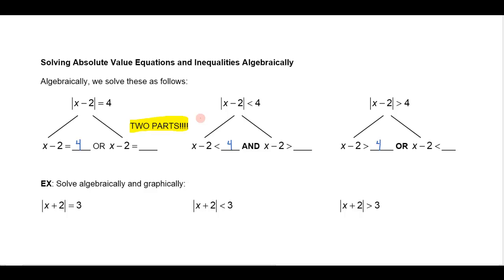That's only half of the problem — if you only do half, you'll definitely get it wrong. There's another half. The other half: look at what you did before, and you just reverse the inequality and put a negative 4 — change the sign. So if it's x minus 2 less than 4, you're going to reverse the inequality and write x minus 2 greater than negative 4.